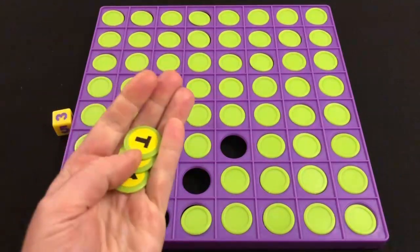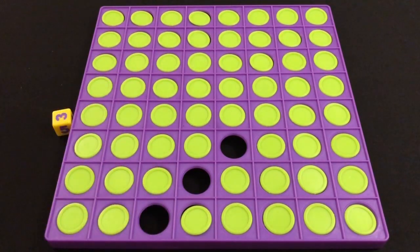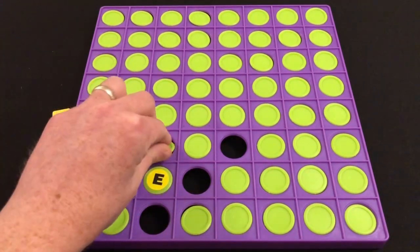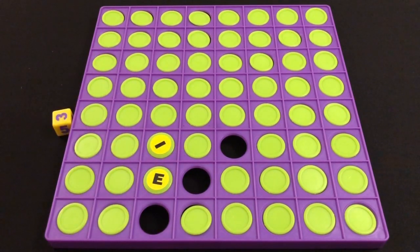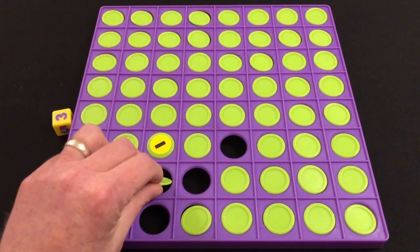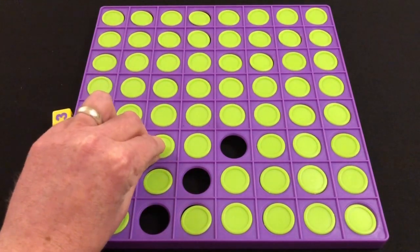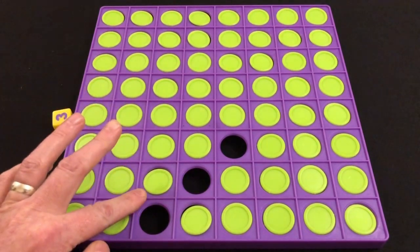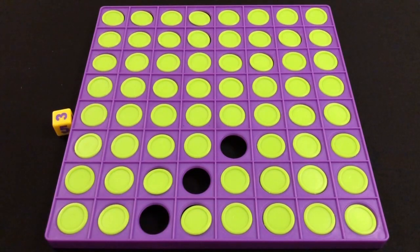And that means I will get to remove all three of these counters from the board and I will keep them for scoring at the end of the game. Each token I have in my stash is worth one point. If for whatever reason I cannot use all of the letters that I have revealed, say for example I had rolled a five and I'd also flipped over this I and this E, once I have removed any counters that I have used to make a word, any remaining counters get flipped face down again.